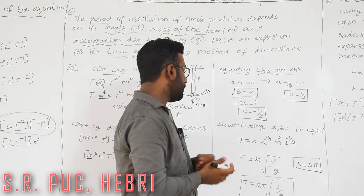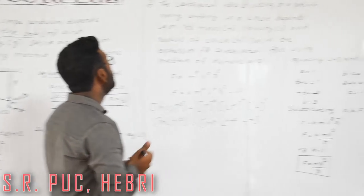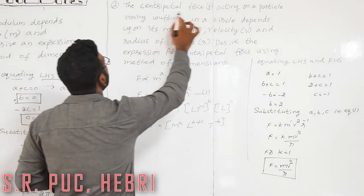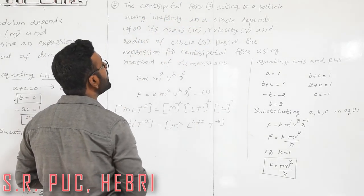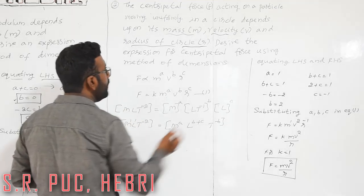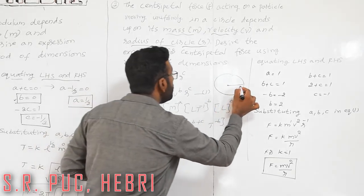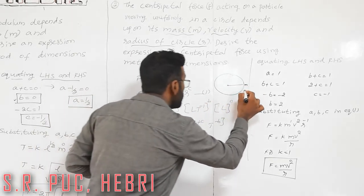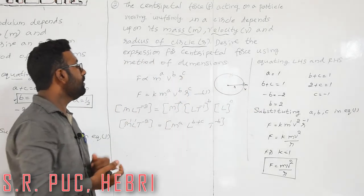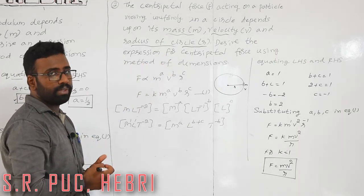You will use this equation in a practical and will also study it again in the oscillations chapter. The next problem: centripetal force acting on a particle moving uniformly in a circle depends on its mass, velocity, and radius of the circle. Derive an expression for centripetal force using the method of dimensions.